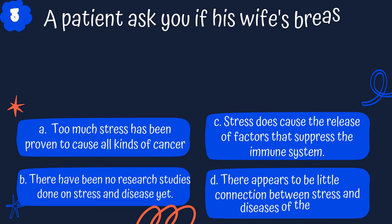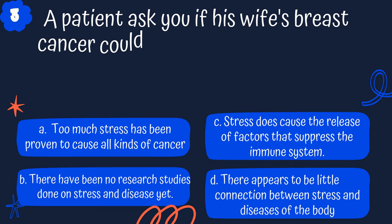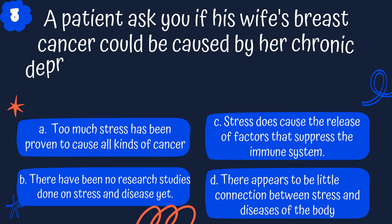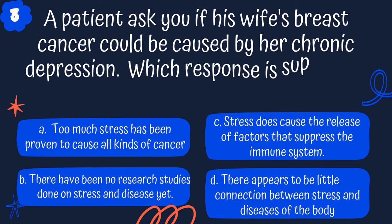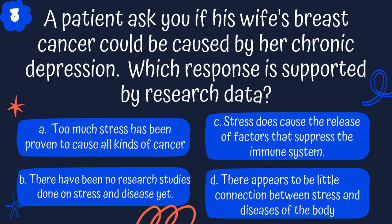Question 3. A patient asks you if his wife's breast cancer can be caused by chronic depression. Which response is supported by research data? A. Too much stress has been proven to cause all kinds of cancer. B. There have been no research studies done on stress and diseases yet. C. Stress does cause the release of factors that suppress the immune system. Or D. There appears to be little connection between stress and diseases of the body.